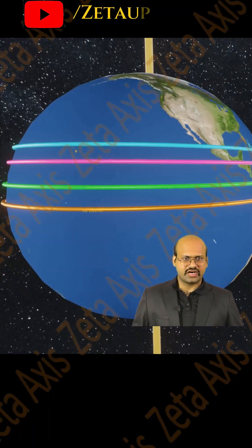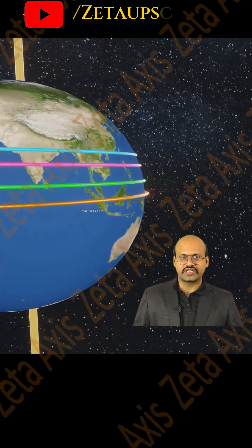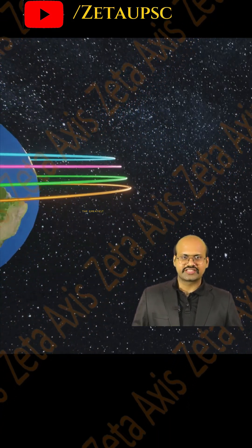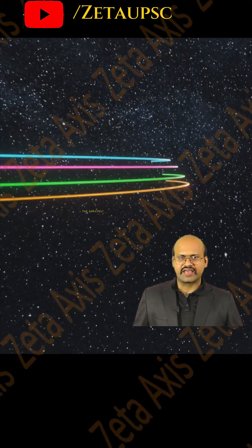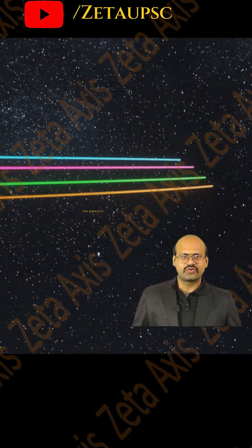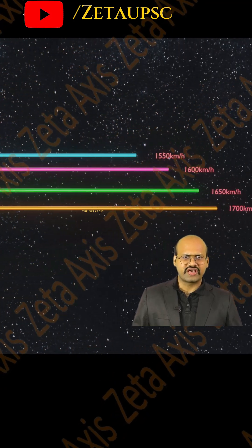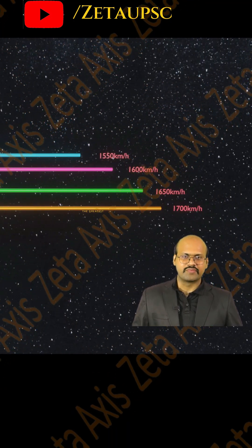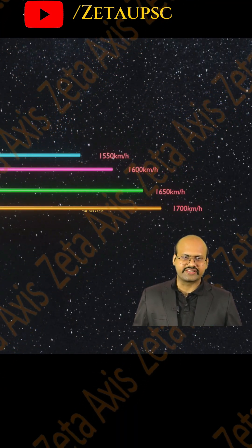The Earth rotates on its axis in 24 hours, but the circular distance at the equator is higher compared to higher latitudes. Therefore, particles at the equator are moving at a higher speed.